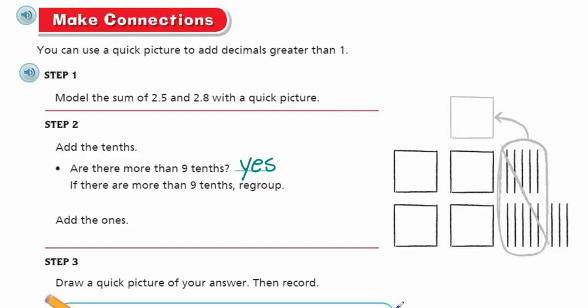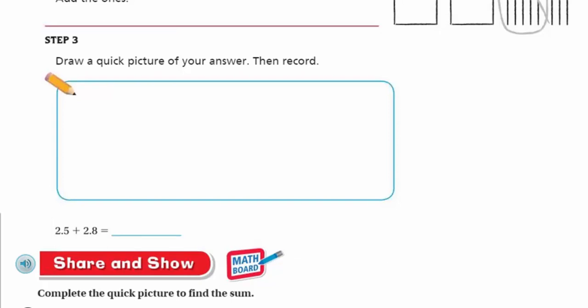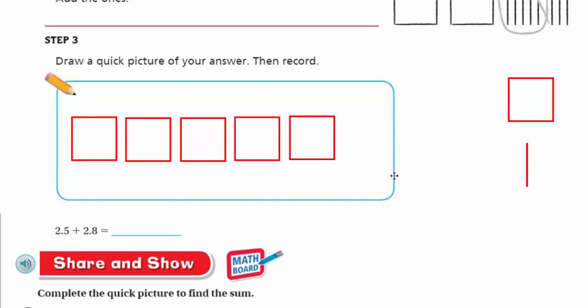Is that what the picture is showing us? I see we have 13. There's 5, there's another 5, there's 3, that's 13. They crossed out the 10 tenths and made another whole. Now it says add the ones. Step three says draw a quick picture of your answer. We have two, we have three, we have four. Remember, we made a new one up there, I regrouped one, and then how many tenths were left over? Three. That was fun. What's our answer? 5.3, you would be right on track.